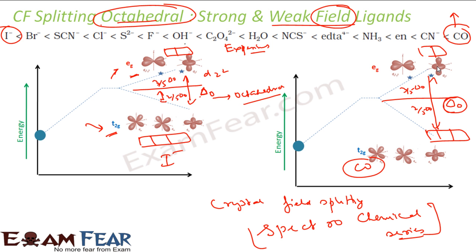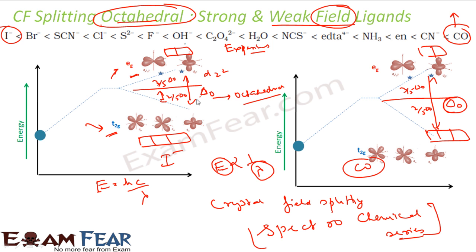The strength of a ligand's field is determined by the absorption of light. Using E = hc/λ, we know that if a shorter wavelength of light is absorbed by a coordination complex, that means more energy is required, which means the field is stronger. If more wavelength — i.e., less energy — is required to excite an electron from one level to another, that corresponds to a weaker field.